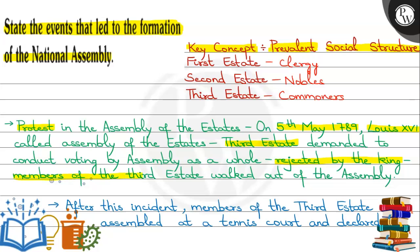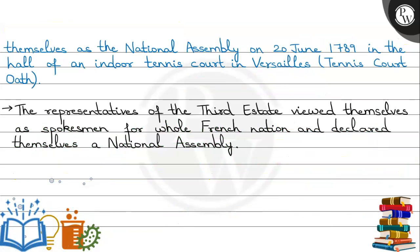Because of this, the members of the third estate staged a walkout from the assembly. After this incident, these members gathered in a tennis court and took the Tennis Court Oath there. In it, they declared themselves as a National Assembly on 20th June 1789. The representatives of the third estate viewed themselves as the spokesmen of the whole French nation, and that is why they declared themselves a National Assembly.